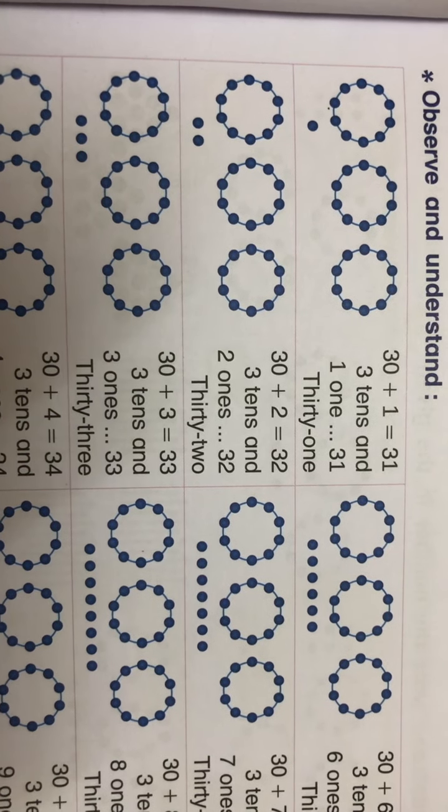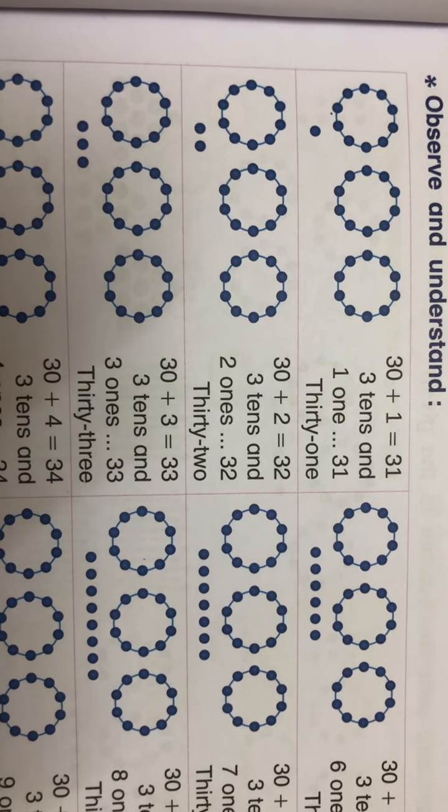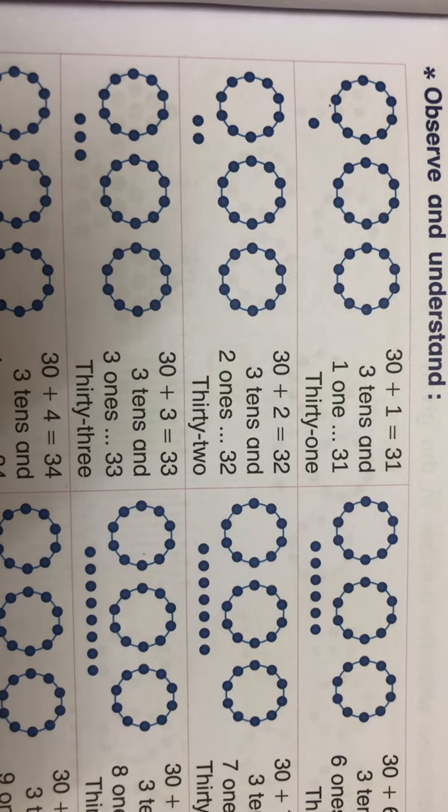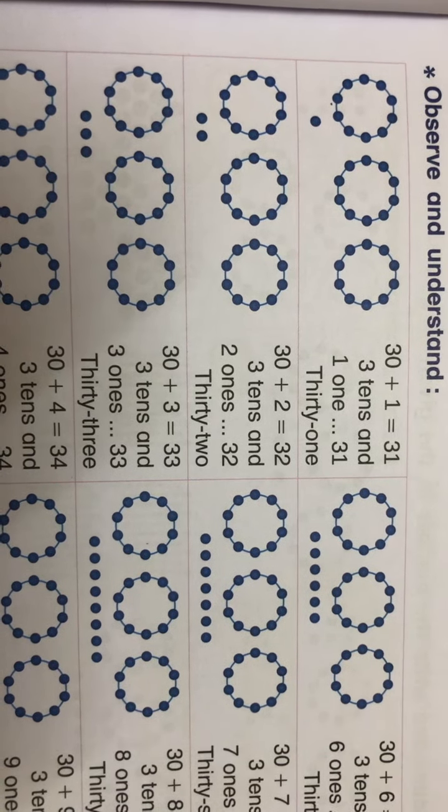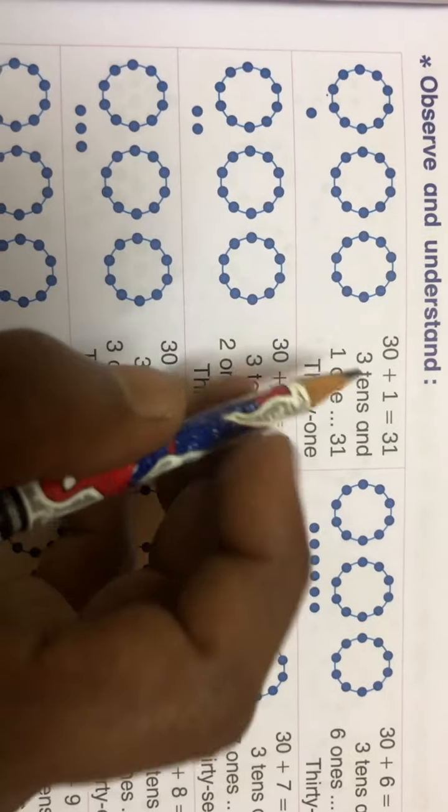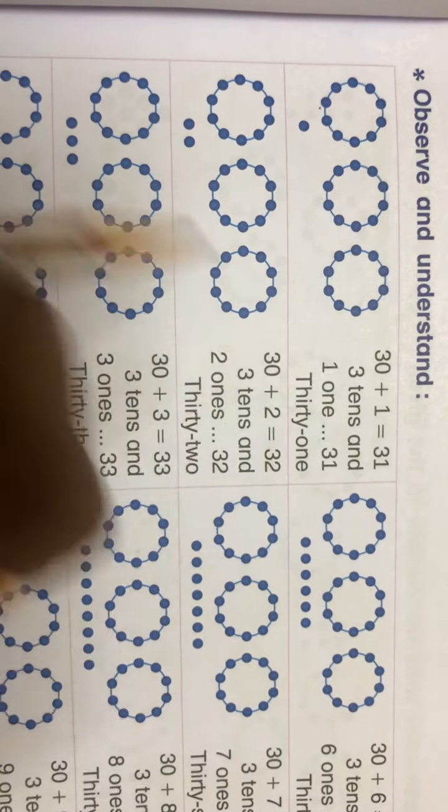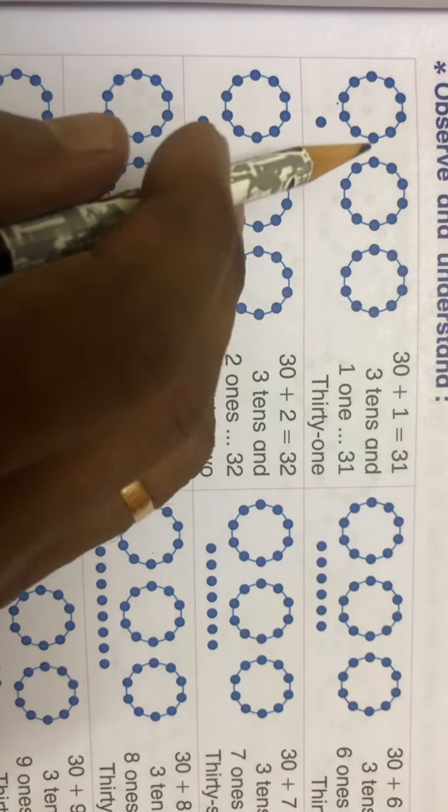Observe and understand. In the previous video, we learned the numbers till 30. Now we'll move ahead and see the next numbers - numbers from 31 to 40. In the previous one, we have seen when there were two